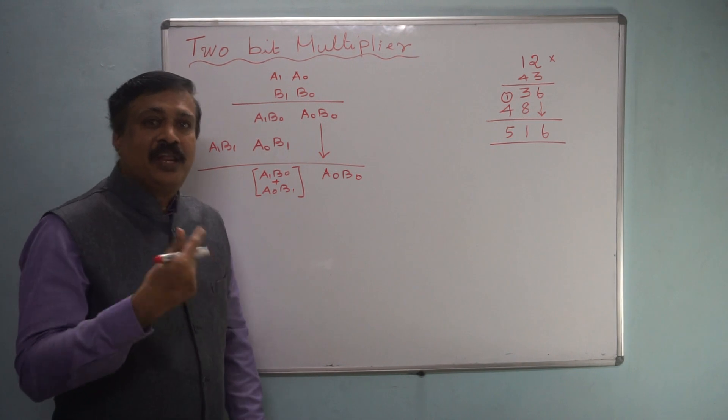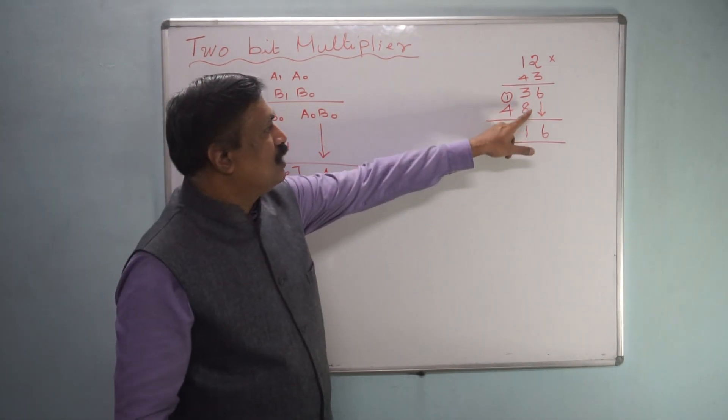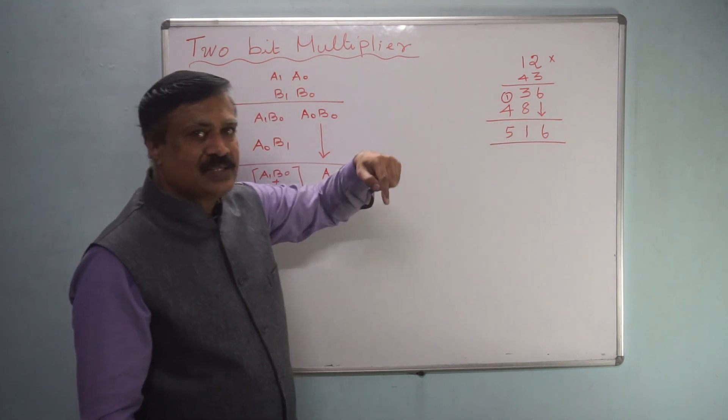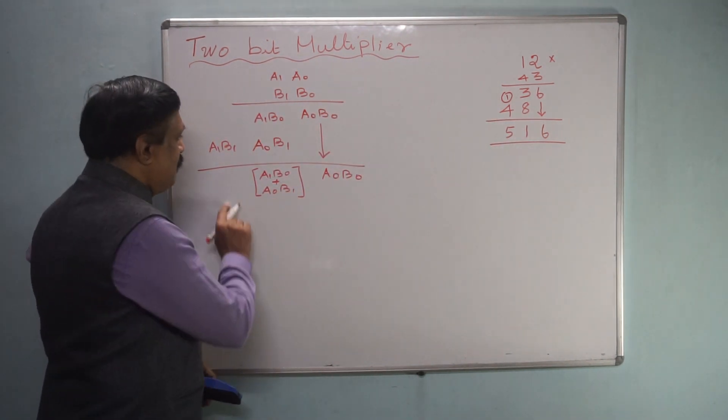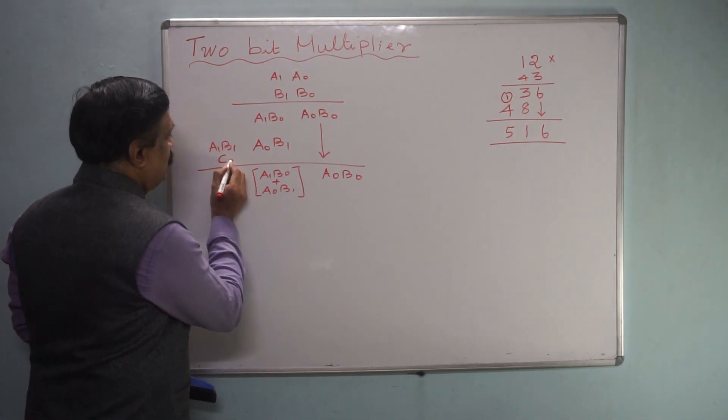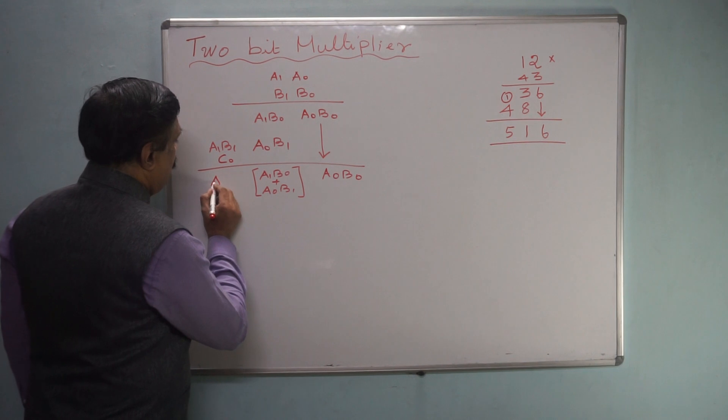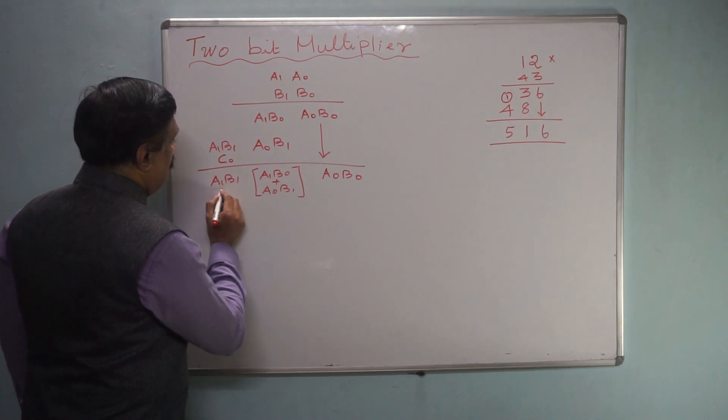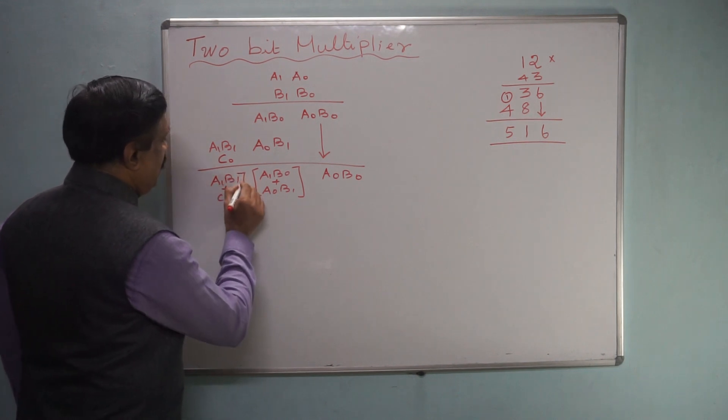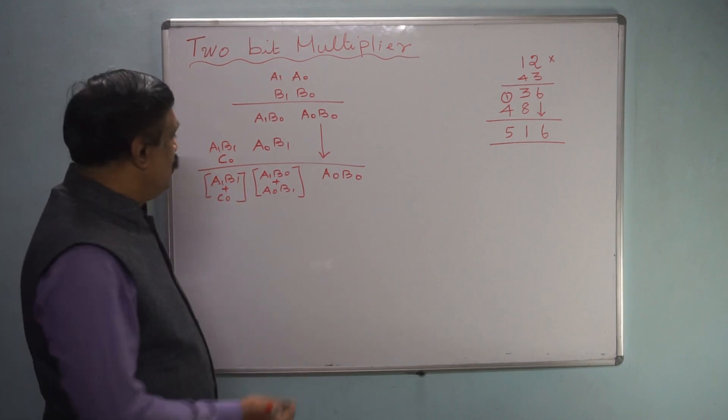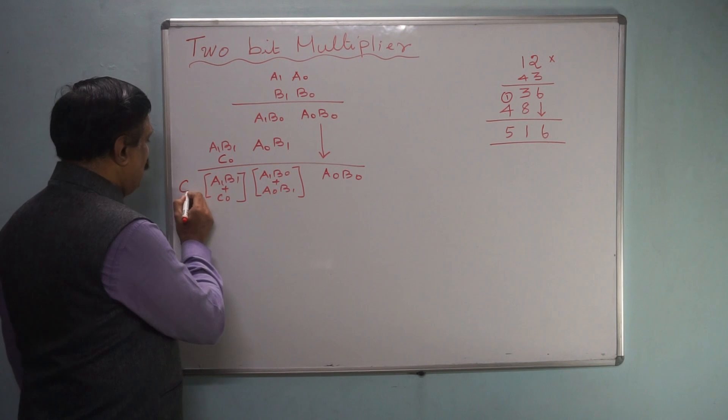If you add, carry may come just like here. Adding 8 plus 3 is 11, 1 carry is there, you are taking the carry to next. Therefore some carry will be there and that carry is taken to next digit, next level. Therefore here A1, B1 plus C0, you are adding these 2 and if there is a carry, then you have to go for next one, C1.